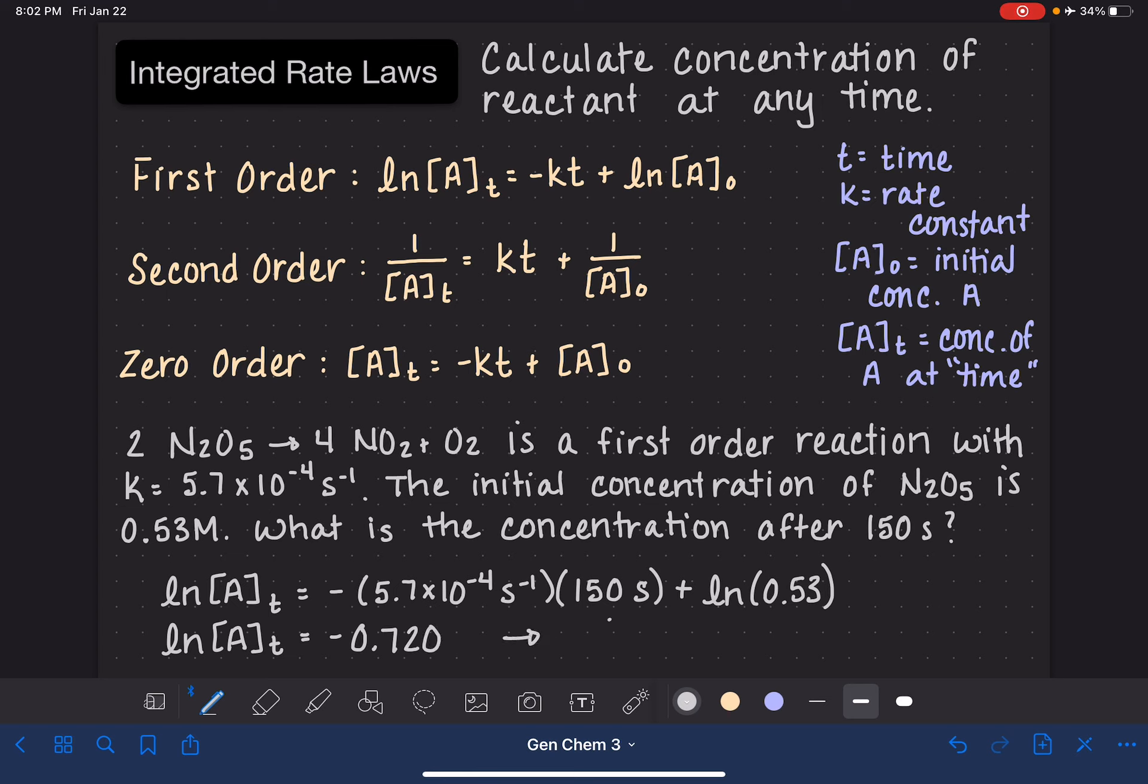So then all I have to do now is solve for A at time T by taking the inverse of the natural log, which is E. E to the negative 0.720, which is 0.487 molar.